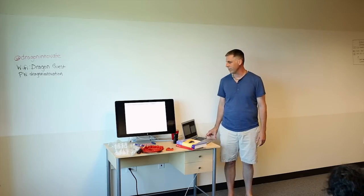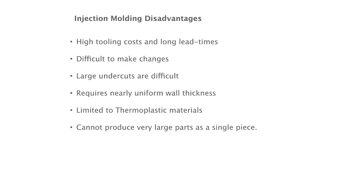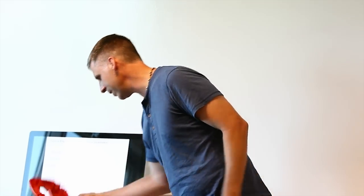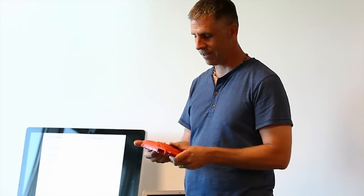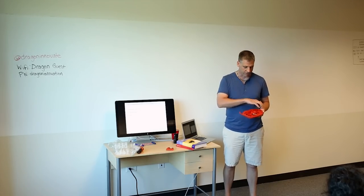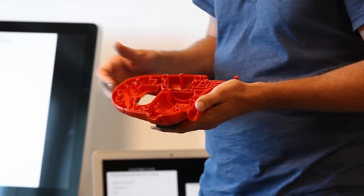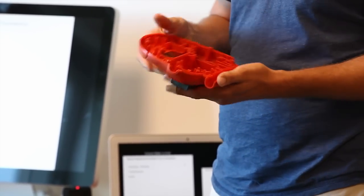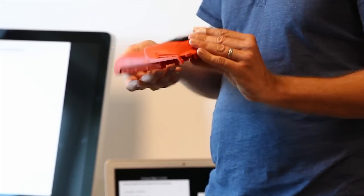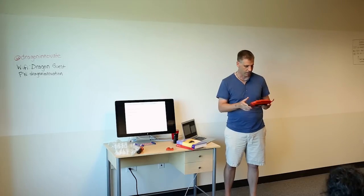What are some parts you might want to mold? We do a lot of consumer electronic products where cost, quality, and schedule are super important. Things like housings — this Black and Decker saber saw has a lot of different features: locating features, screw bosses, alignment parts for the reciprocating blade, motor mounts. They're really good when you've got to integrate a lot of parts in a very cost-effective manner.